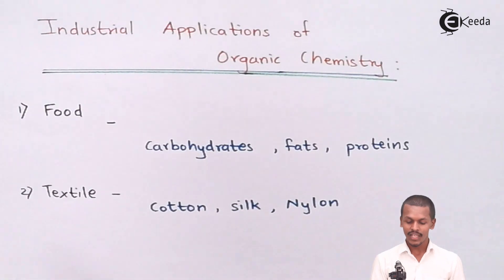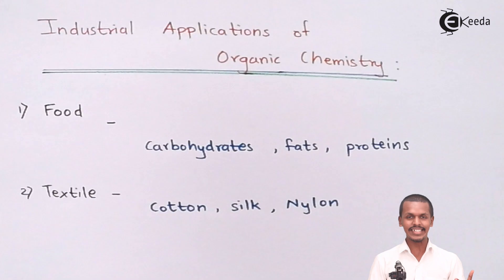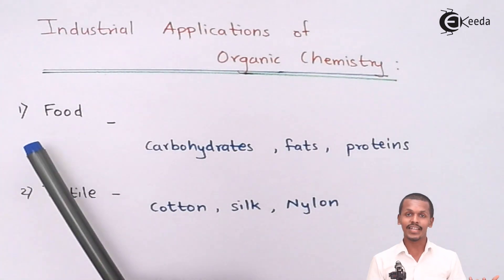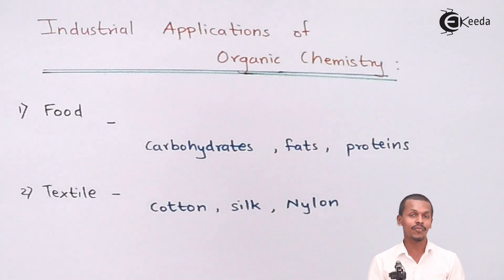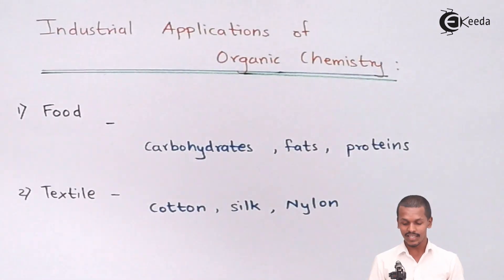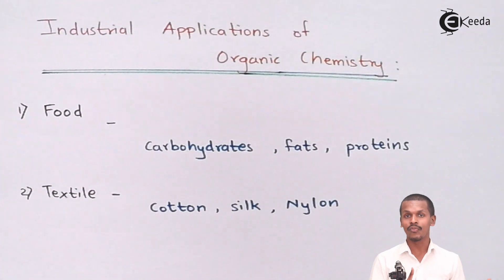Talking about the first application — food. Food basically consists of carbohydrates, fats, and proteins. These substances are very essential for a human being to survive, and these substances are basically organic compounds. That is the application of what we use as an organic compound in food.